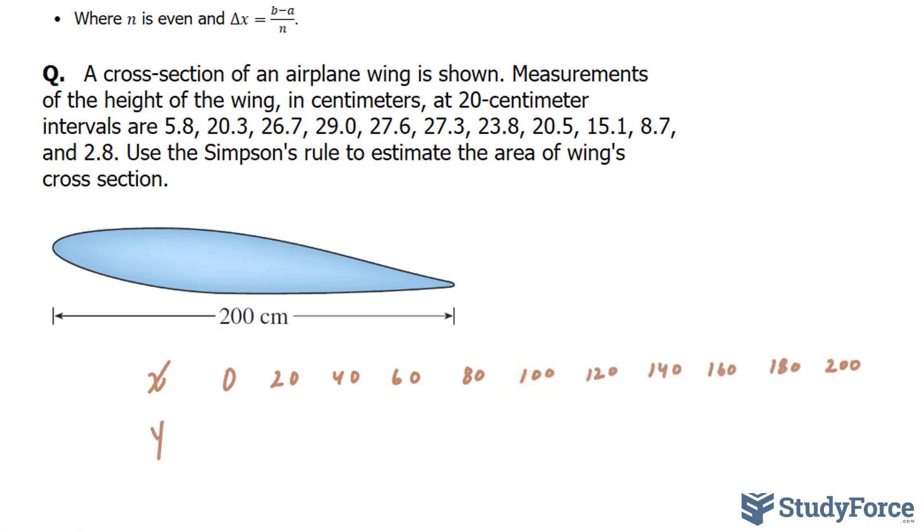Now that we've written these numbers, we can go ahead and write down the heights that correspond to each. So at our first observation, it was 5.8, then 20.3, 26.7, and you keep recording these numbers all the way to 200. There you go. Now be mindful that this step is completely arbitrary, so if you choose not to do it, that's strictly up to you.